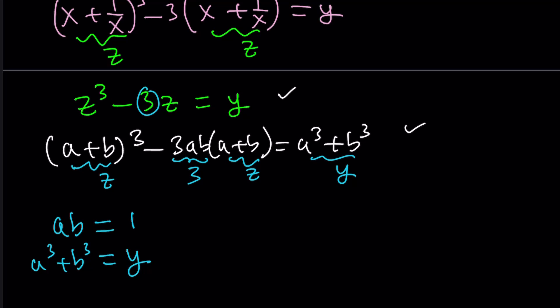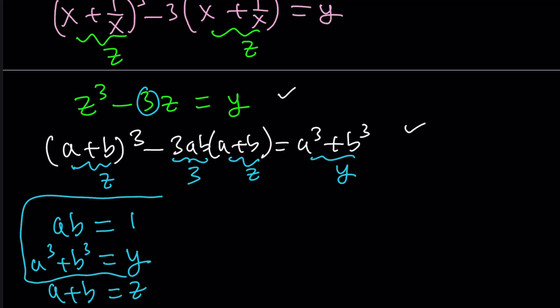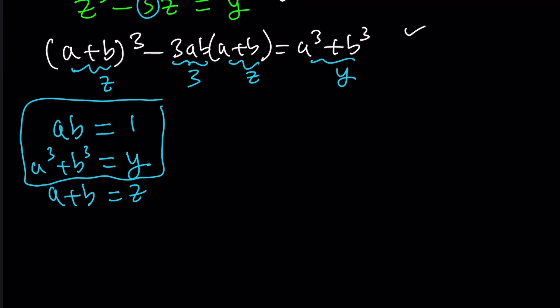So we have three equations: a plus b equals z, ab equals 1, and a cubed plus b cubed equals y. We're going to focus on ab equals 1 and a cubed plus b cubed equals y first. Even though it looks cubic, it's actually a quadratic system — because you can write ab equals 1 as a cubed times b cubed equals 1.